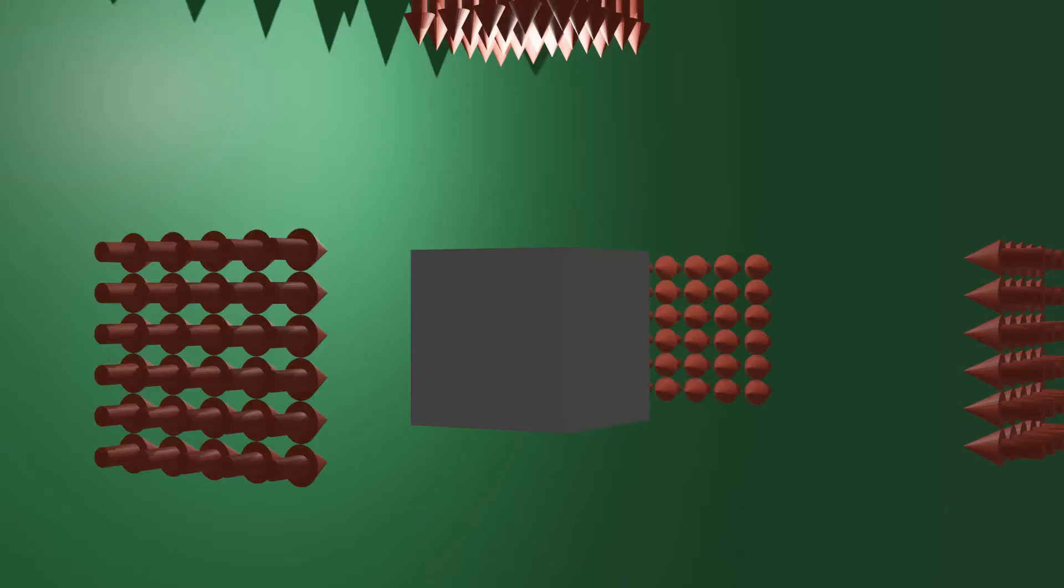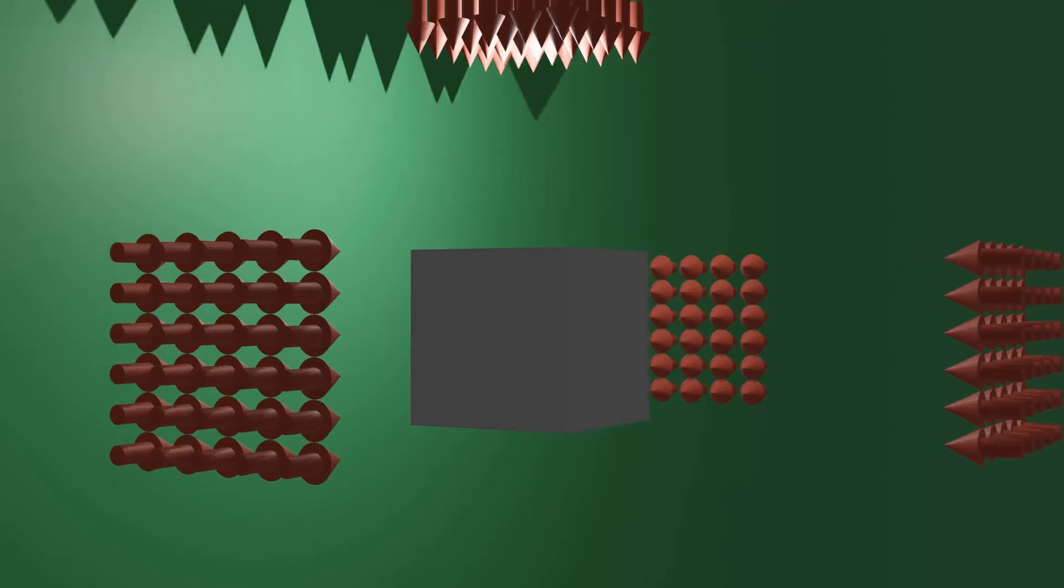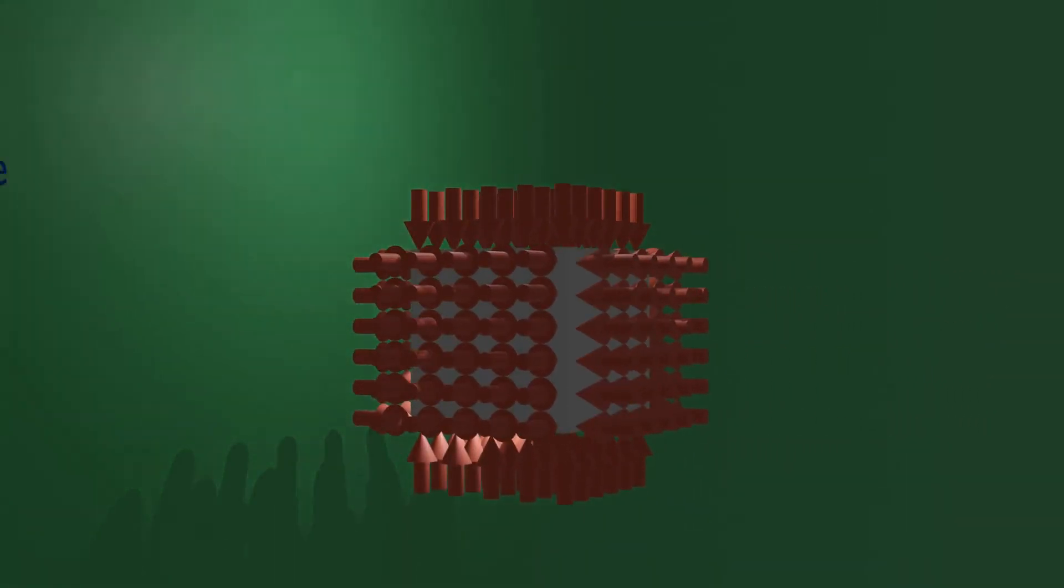To show how absolute pressure looks, let us consider a cube box floating in the atmosphere. The atmospheric pressure acts the same in all directions.